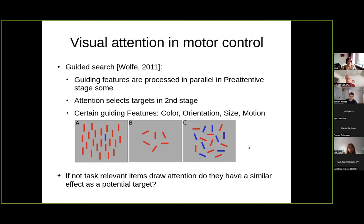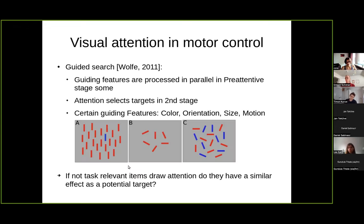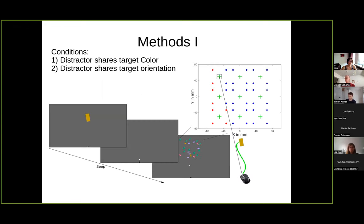So in the odd-one-out task we saw, this is not a conjunctive visual search task and does not require visual attention, yet you see these differences in trajectories. What about target items that have a similar feature as the target in a scene where you don't know where the targets are located? Do they also have an effect that would bias mouse trajectories? That is what we want to investigate with two experiments.